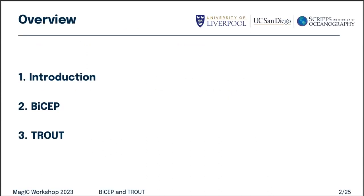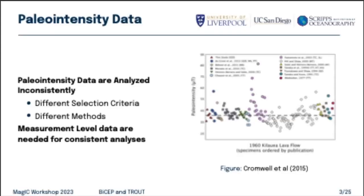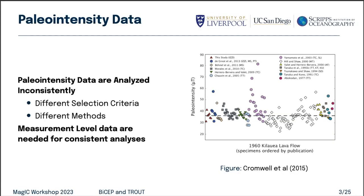I've got two methods with funny acronyms that I'm going to show you today. There's one called BICEP, which stands for Bias-Corrected Estimation of Paleo Intensity. And the other one's called TROUT, which stands for Thermal Resolution of Unblocking Temperatures. That's the structure of this talk — the motivation behind this, at least behind the BICEP method, is the state of selection criteria in paleointensity data.